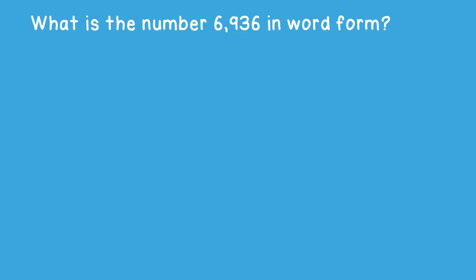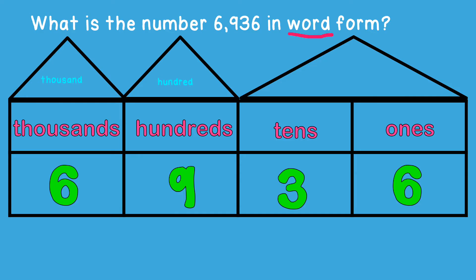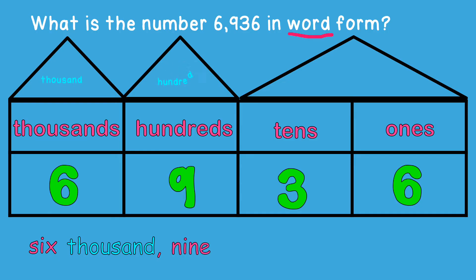How is the number 6,936 written in word form? Remember that word form means to write using words. To write the number in word form, we will start by placing the digits in the number inside the place value chart. Start with the first number because it is the greatest value: 6, followed by the word thousand because it is in the thousands place. Don't forget the comma after thousand. Then write the number 9, followed by the word hundred because it is in the hundreds place. Finally, the last two numbers: 36.